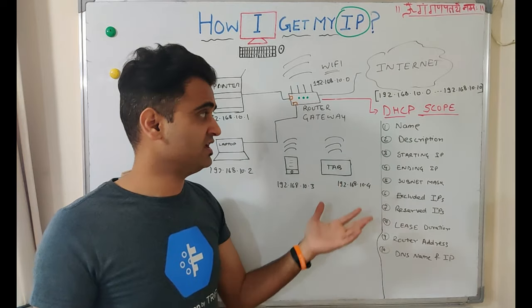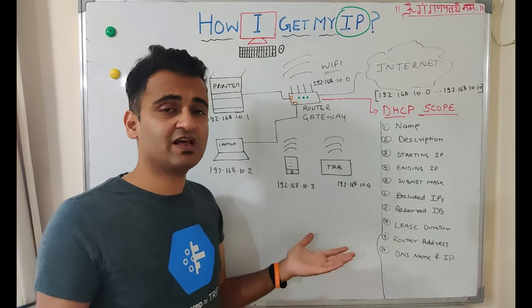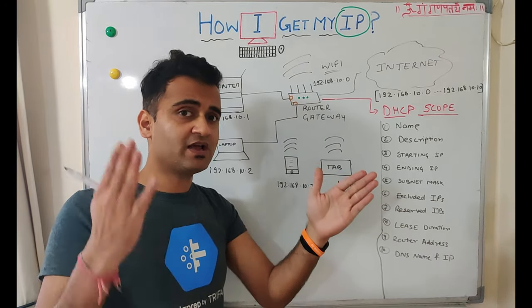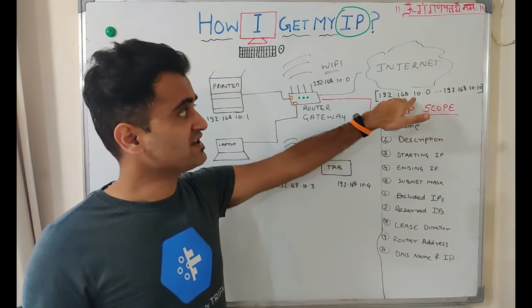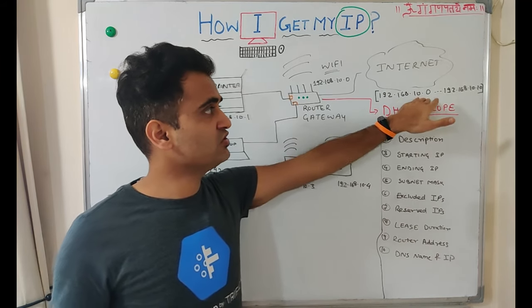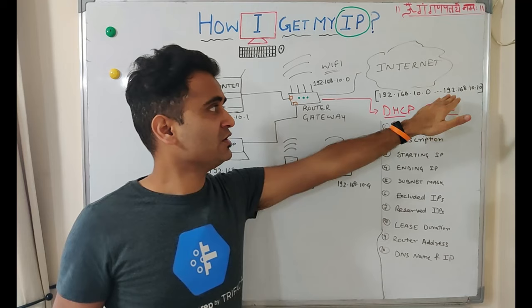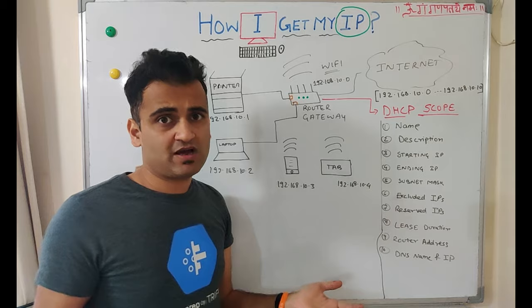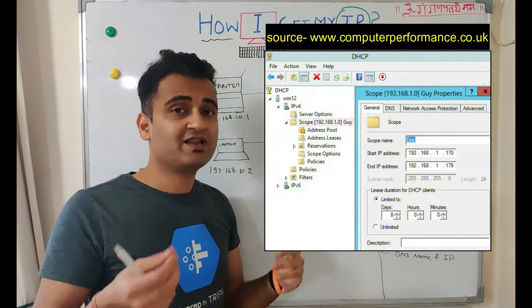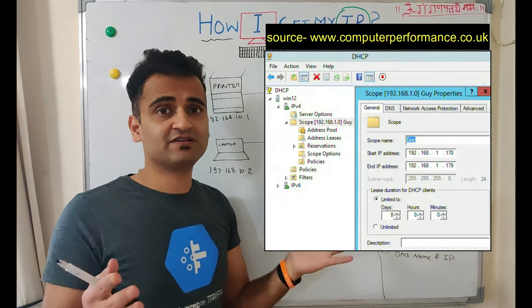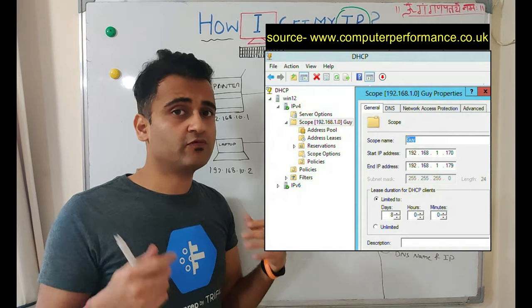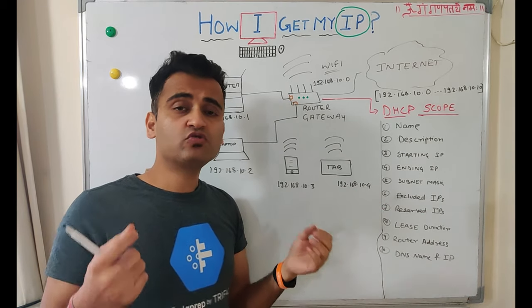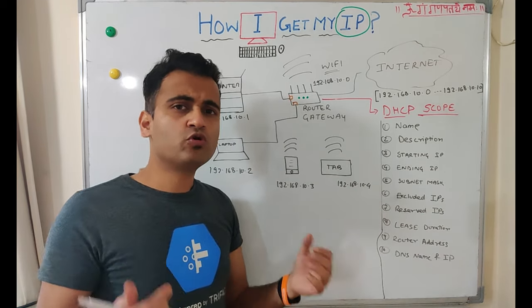Let's understand the entities that form a DHCP scope. The first fields are the name and description of the DHCP scope — self-explanatory. Then you need the starting IP and ending IP; in our example that is 192.168.10.0 to 192.168.10.10. After that, you need the subnet mask. If you want to learn more about subnetting, there is a detailed video available for that topic.